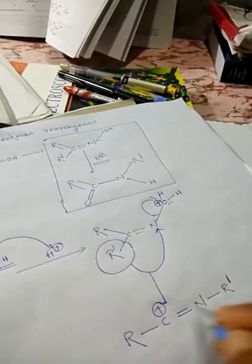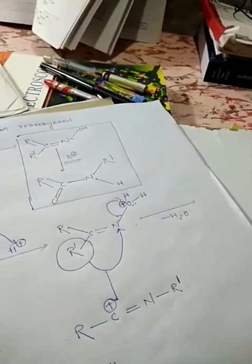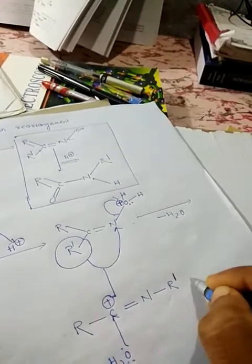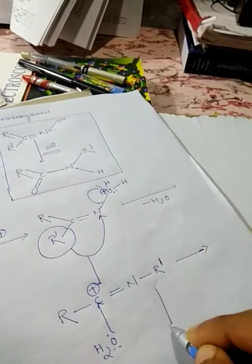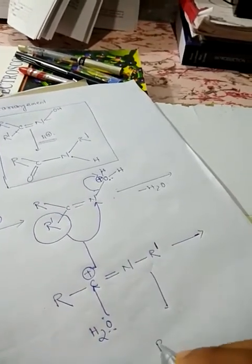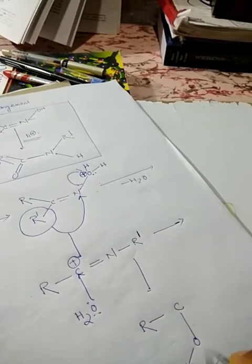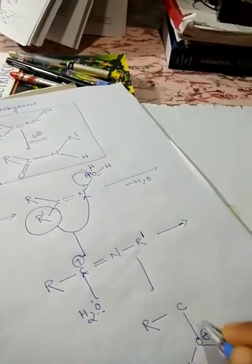Now, as we know, in this case it will lose a molecule of water. Now a water molecule will attack this carbon atom. The compound is R-C-O-H+. Due to loss of the lone pair, it will acquire a positive charge.